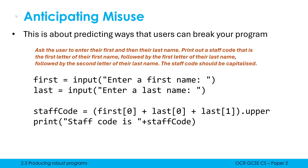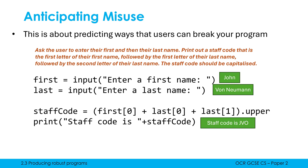We've got two input lines. The user, when asked, could type in a valid input like John and von Neumann — those are two examples of valid inputs which would work with this program. Then the next line is a complex one where we are using indexing and concatenation to join together each individual character in this string.